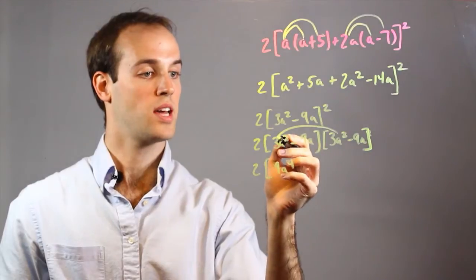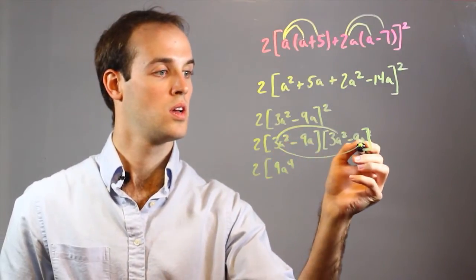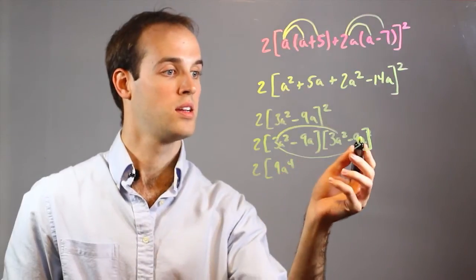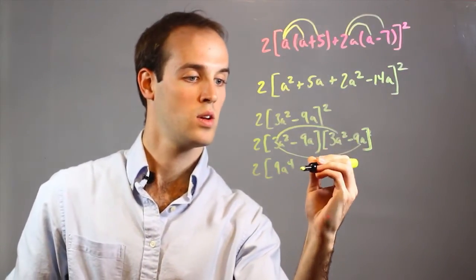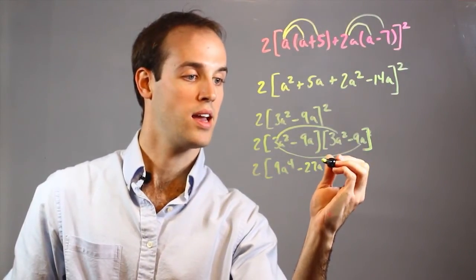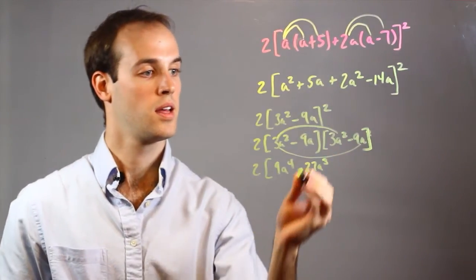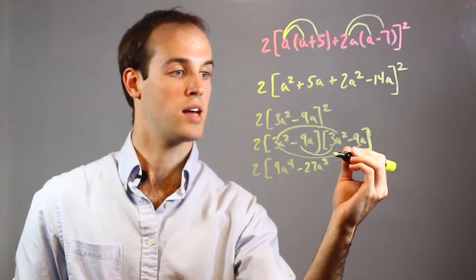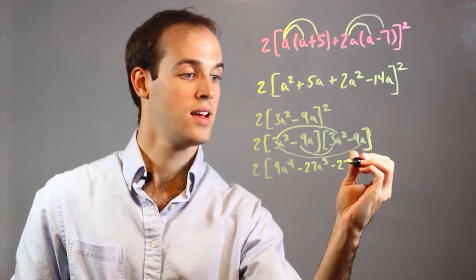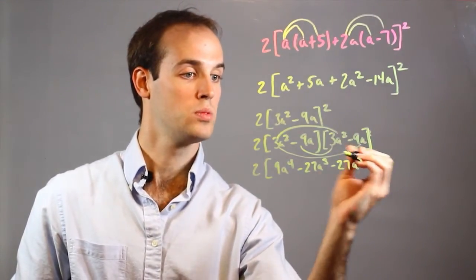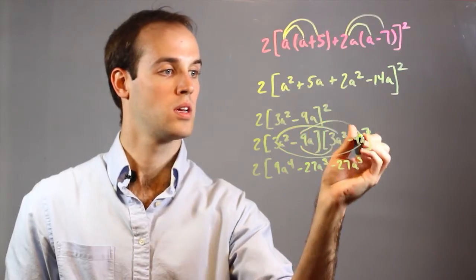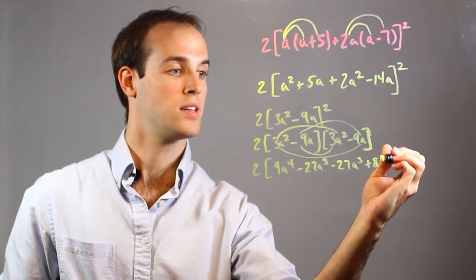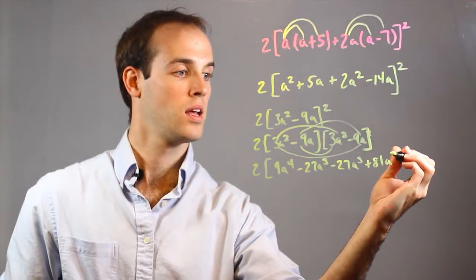Then I would do the outside terms, which is 3A² times -9A, which is -27A³. Then the inside terms, -9A times positive 3A², which is again -27A³. And then the last terms, which is -9A times -9A, positive 81A².